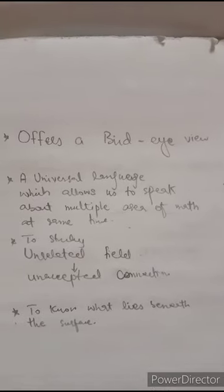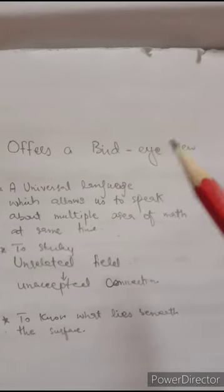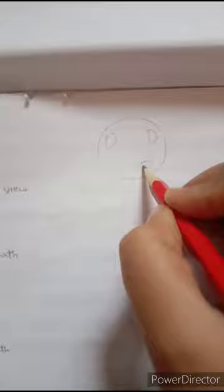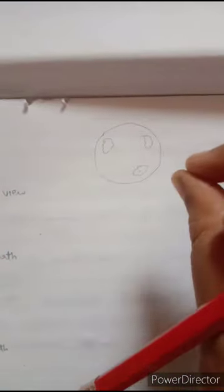Assalamualaikum. Today I'm going to discuss about category theory — what is category theory and what are the advantages of category theory. Category theory is basically a study which offers a bird's eye view. A bird's eye view is the way you see things if you are a bird looking from very distant above — this is the view that category theory offers.